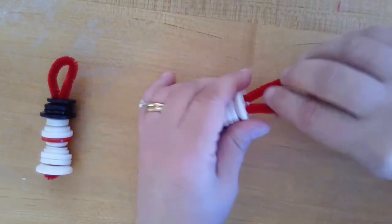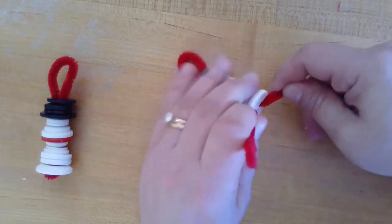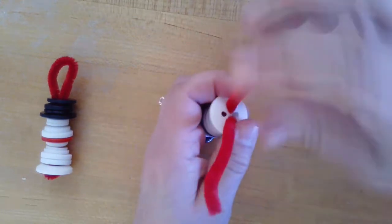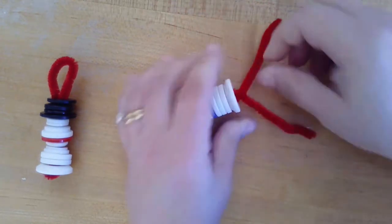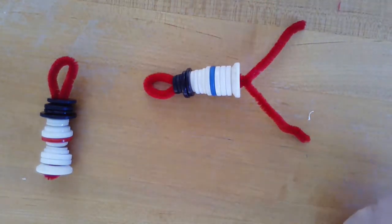Now to finish it up, you're going to twist the bottom a little bit - the chenille stems, the pipe cleaner stems - just give them a little twist to keep those buttons on.